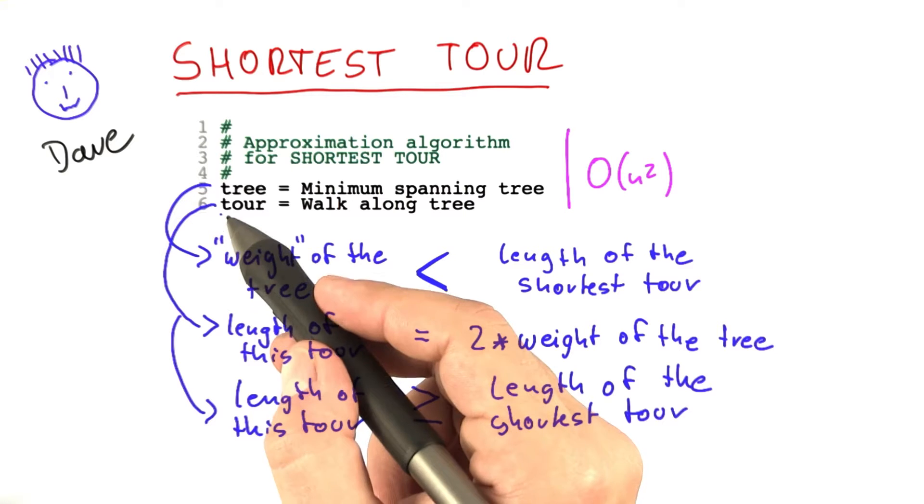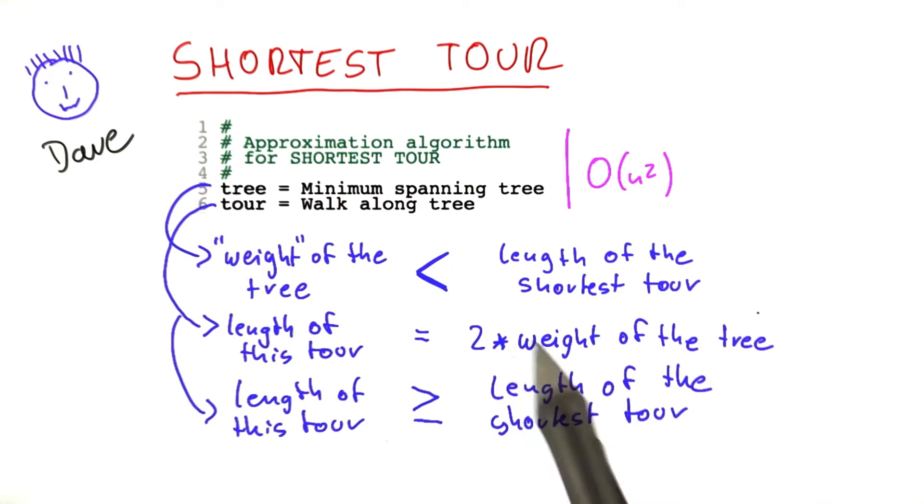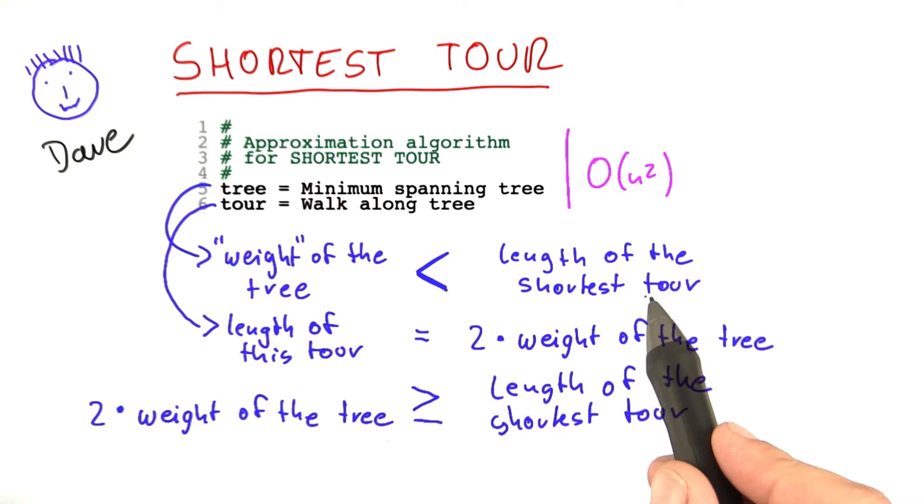So we know that the length of the tour computed by the algorithm is exactly 2 times the weight of the minimum spanning tree. Now we will use the piece of information that we have up here, so let's make a little bit more space down here.